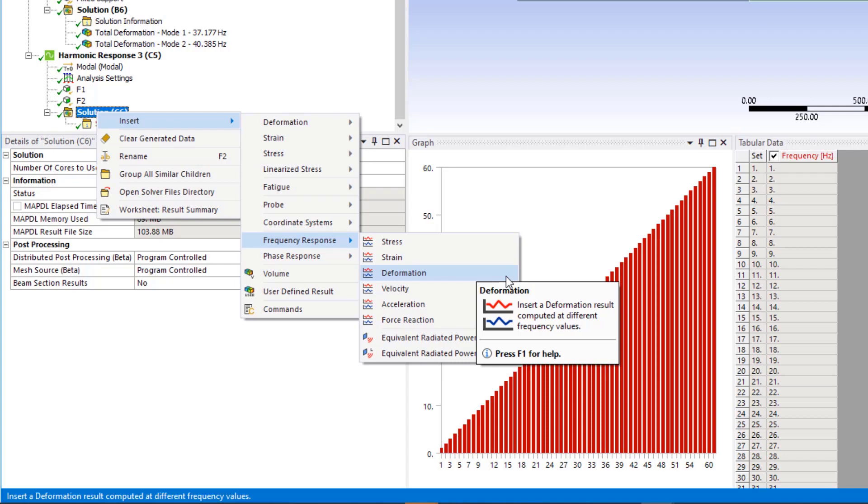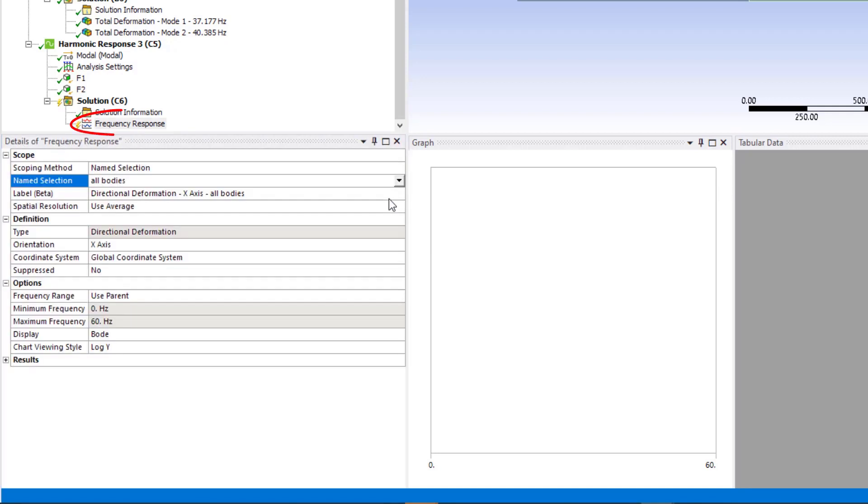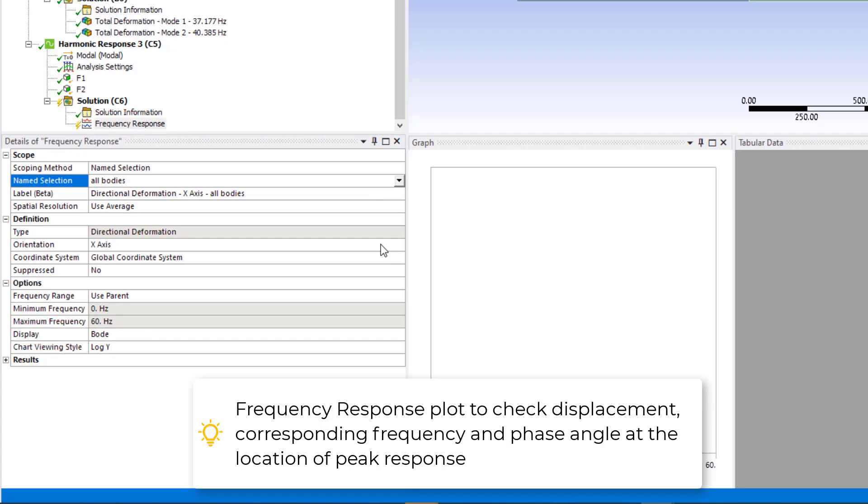From there, we can examine local results in more detail such as displacement, stress and strain depending on the acceptance criteria we are trying to satisfy. For this example, we begin by inserting a frequency response plot also known as a Bode plot to ascertain the displacement corresponding frequency and phase angle at the location of interest. This is usually the location of peak response.